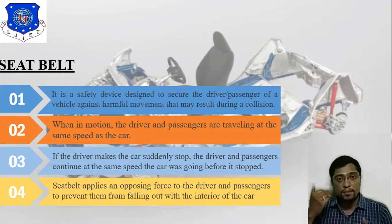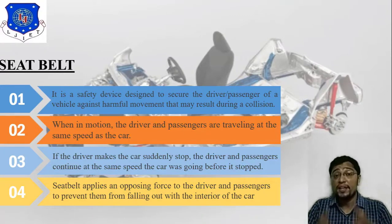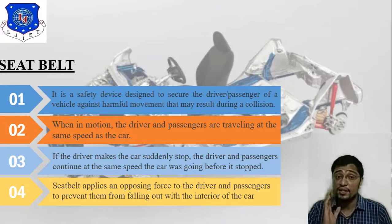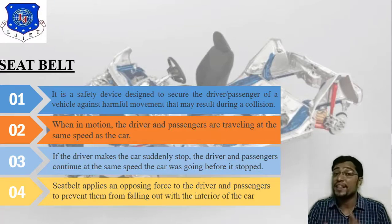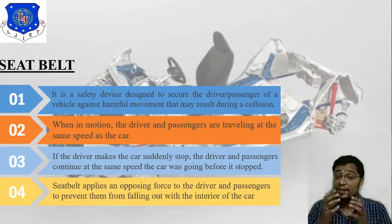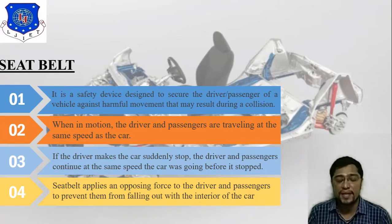When the car is in motion, the driver and passenger are traveling at the same speed. If the driver makes the car suddenly stop, the driver and passenger continue at the same speed, but the seatbelt suddenly creates the opposite force. At that time, the seatbelt is very important.